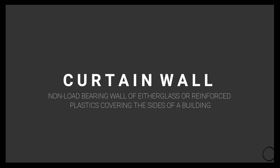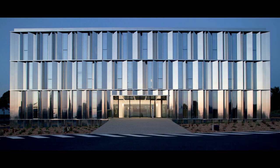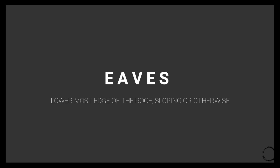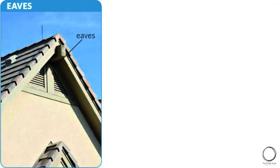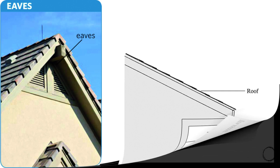The next architectural term is curtain wall, which means a non-load-bearing wall of either glass or reinforced plastics covering the sides of the building. Looking at the image, this curtain wall is clearly a glass facade that just acts like a curtain or transparent barrier. Moving on, eaves means the lowermost edge of the roof — sloping or otherwise — clearly marked in the image and in a section showing the bottom end part of the roof.